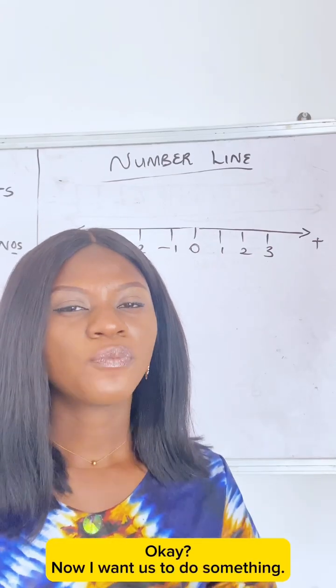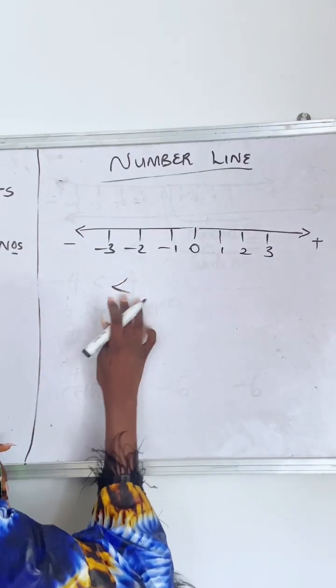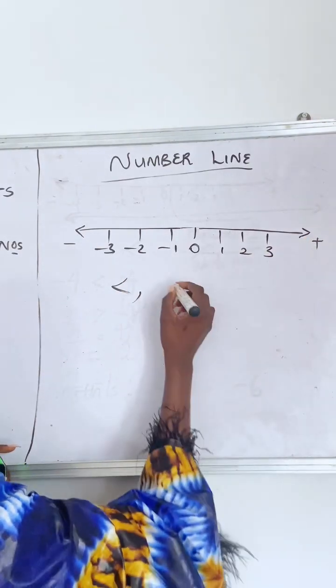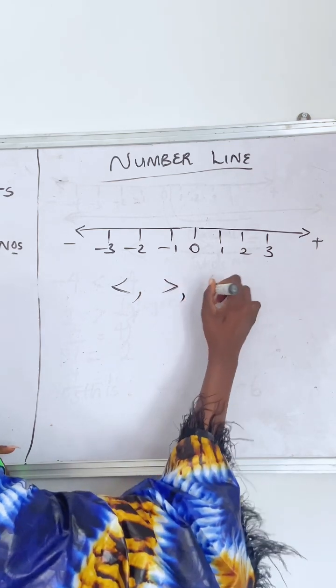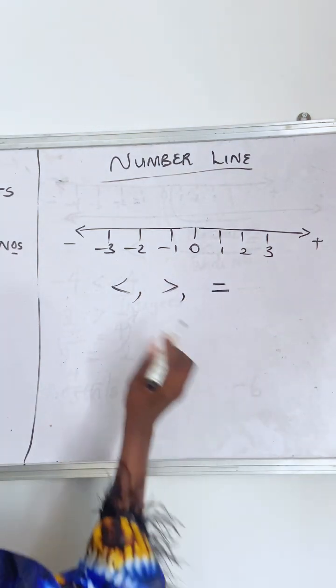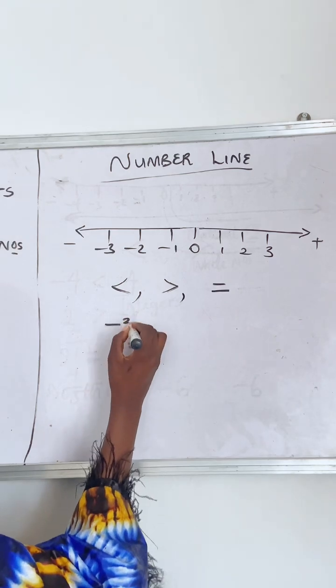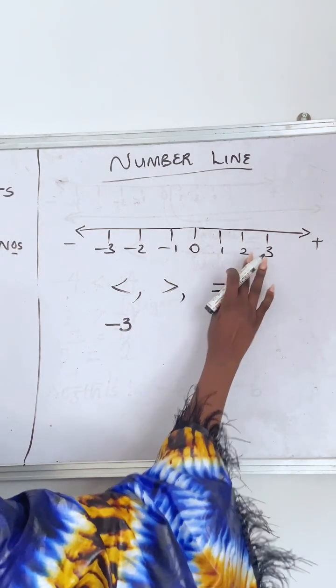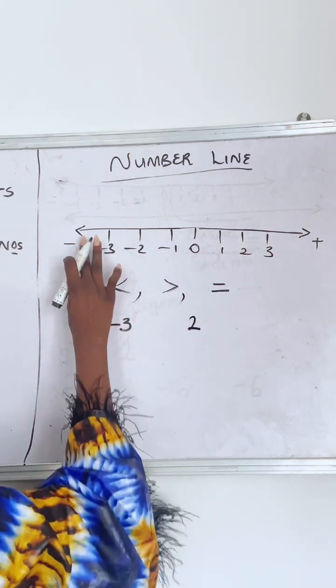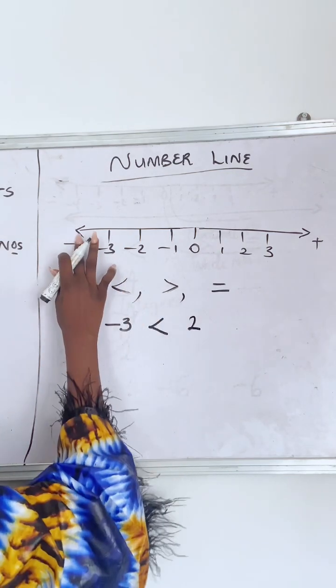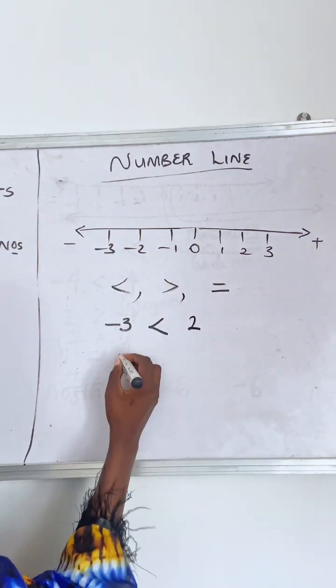Okay, so now I want us to do something. We have the less than, we have the greater than, and we have the equal to. Let's give an example. If we say minus three, what is minus three to two? Minus three is less than two.